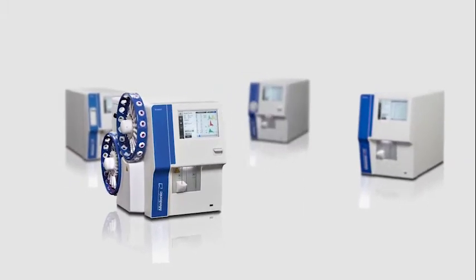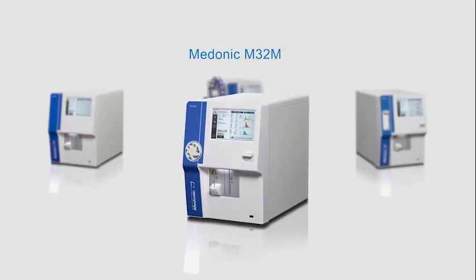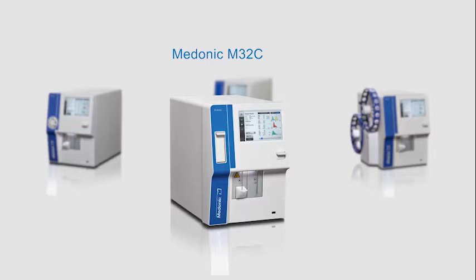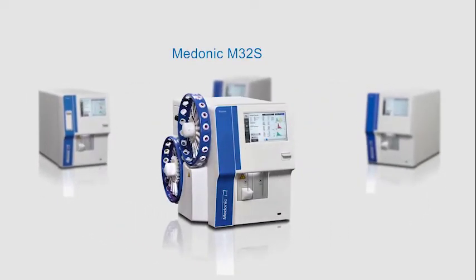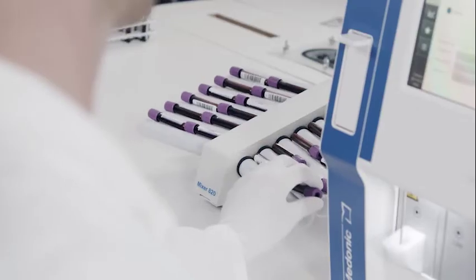Four different models are available: M32B Basic Model, M32M for the mainstream laboratory, M32C featuring closed-tube sample handling, and M32S with a walk-away tube sampler. Whichever you choose, Madonic M32 will occupy pride of place in your hematology lab.